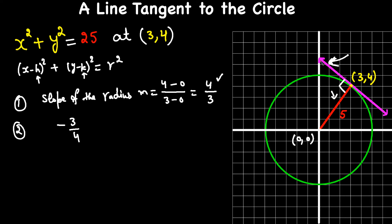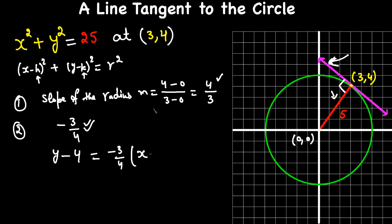Now we have the slope of the line. We use the general point-slope equation: y - y₁ = m(x - x₁). In our case, y₁ is 4, the slope m is -3/4, and x₁ is 3. So we write: y - 4 = -3/4 · (x - 3).